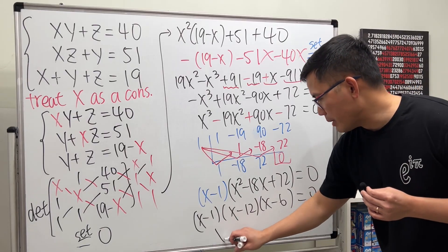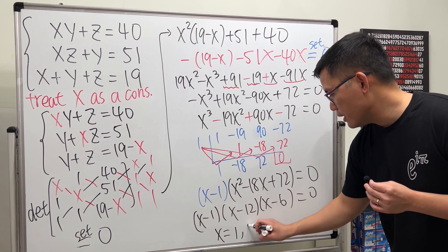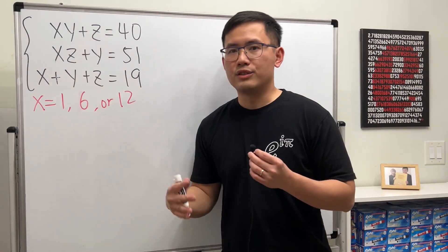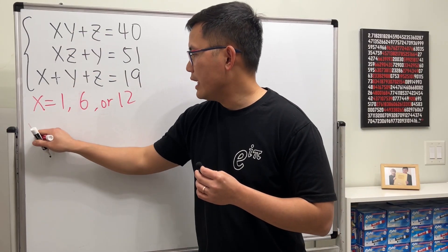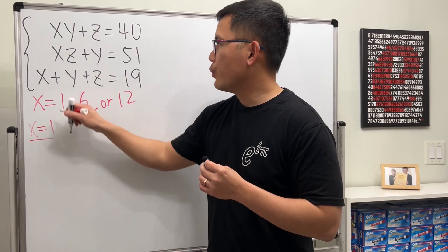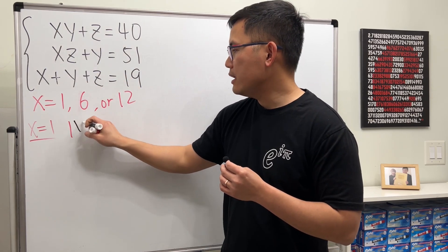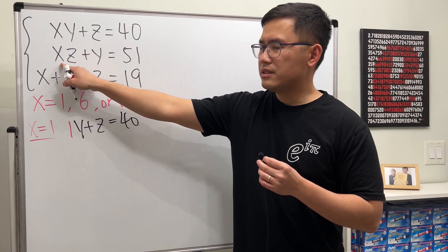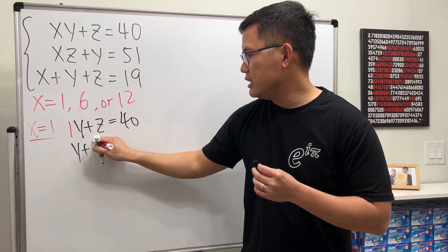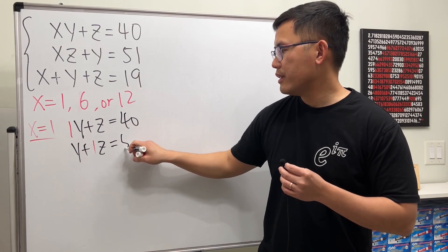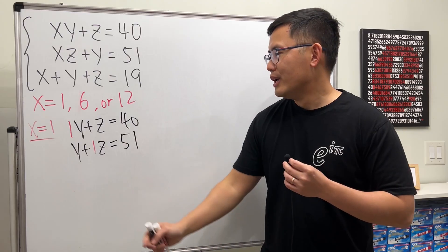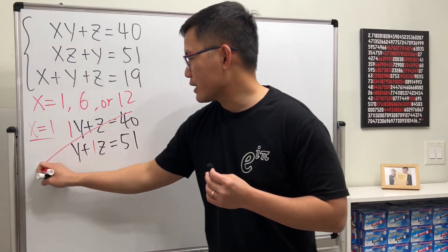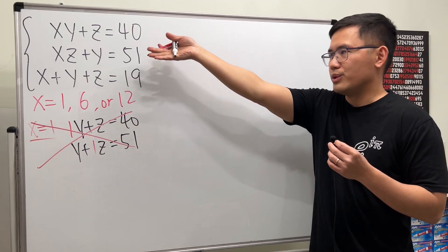We have three possibilities for x: 1, 12, and 6. Let's plug in x = 1 first. The first equation becomes y + z = 40, and the second becomes y + z = 51. These contradict each other, so x = 1 does not give a valid solution.